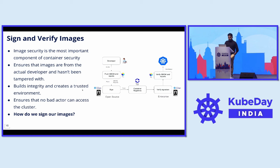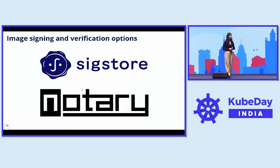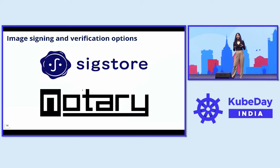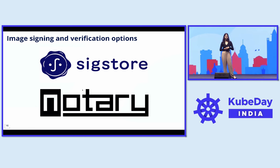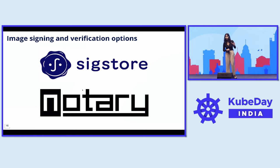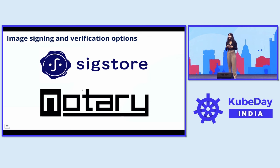Anything added on top of the current image leads to a new digest. Since the image signature was attached to the previous digest, the consumer will know what code was trustworthy and what was added by someone untrustworthy. This image signing and verification flow can then be used by any Kubernetes dynamic admission controller to enforce rules inside a cluster, build integrity, and create a trusted environment, ensuring no bad actors get access to your cluster.